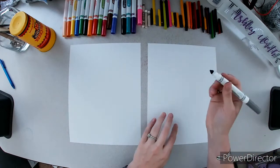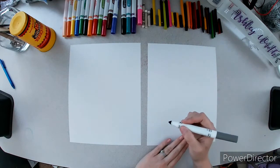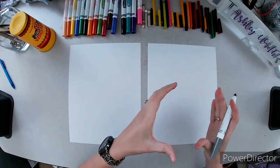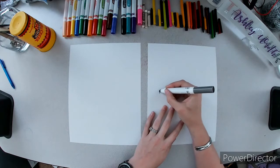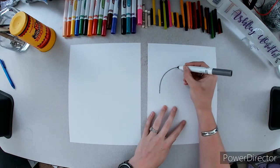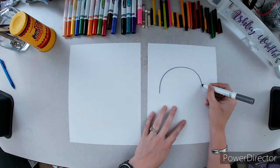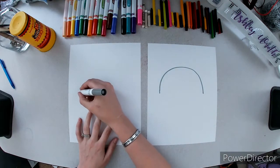So the first step for both is to create a C shape that's on its side. You want to make sure you don't draw this teensy tiny because if you draw it teensy tiny you're going to run out of room. So kind of like a rainbow shape and we're doing that on both.